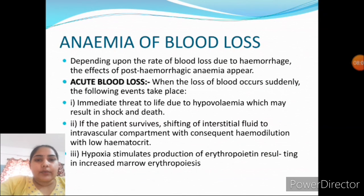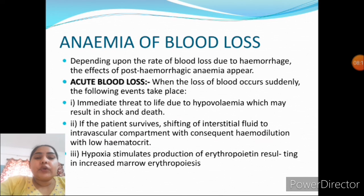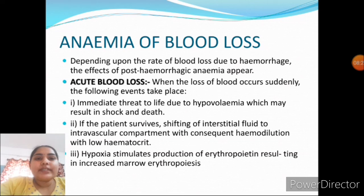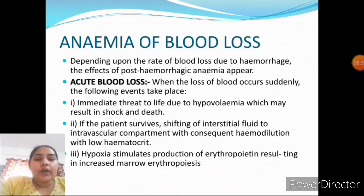Anemia due to blood loss is of two types: acute blood loss and chronic blood loss. In acute blood loss, the following events take place: immediate threat to life due to hypovolemia, which may result in shock and death. If the patient survives, there is shifting of interstitial fluid to the intravascular compartment causing hemodilution with low hematocrit. Hypoxia then stimulates production of erythropoietin, resulting in increased marrow erythropoiesis.